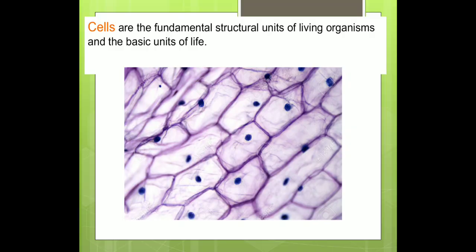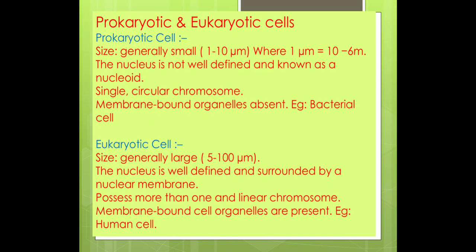Just as making buildings requires bricks of different designs, shapes, and sizes, similarly cells also come in different designs, shapes, and sizes. Cells are the fundamental structural units of living organisms and they are the basic units of life. As you can see in the picture, they form block-wise structures making a complete structural unit. Cells are basically of two types.